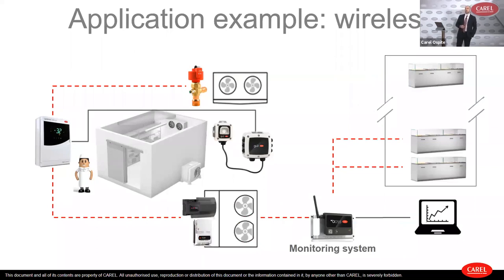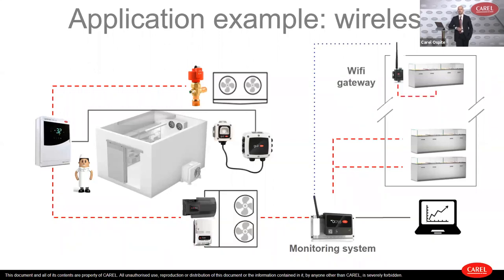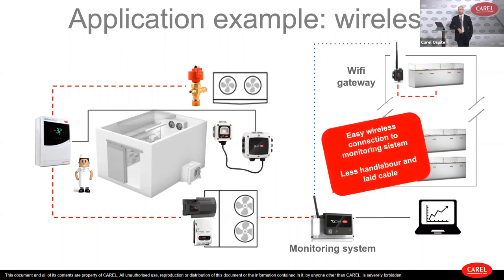Another important application involves wireless connectivity. For example, in a convenience shop with one cold room and three display cabinets — two cabinets close to the monitoring system and one very far away — if a cable cannot be run to that display cabinet, we can exploit a Wi-Fi gateway directly connected to our display cabinet, connected via Wi-Fi to our BOSS Mini system. This allows a quick connection to the system, less labor, and fewer cables on the installation.